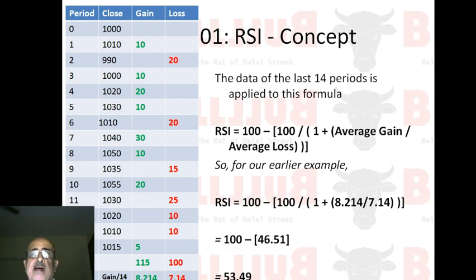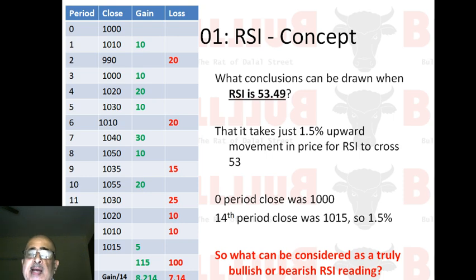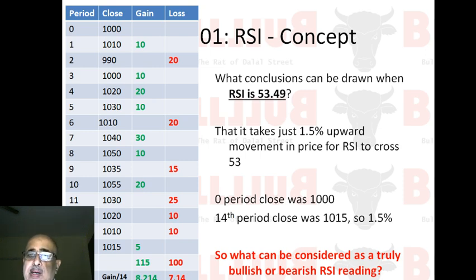What does an RSI of 53.49 tell us? In these 14 periods the stock moved up from 1,000 to 1,015 — that's a 1.5 percent appreciation (15 divided by 1,000). So with a 1.5 percent gain and an RSI reading of 53, is the stock bullish, neutral, or what? That's something I'm going to tackle in the second video. This video is for you to understand what RSI takes into account and what it calculates.